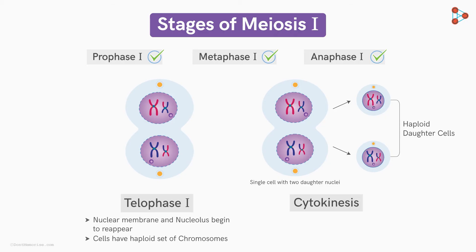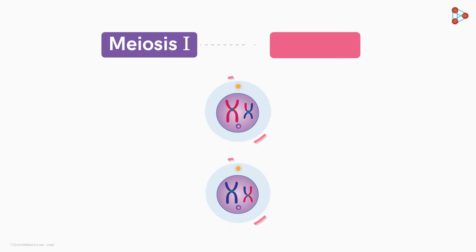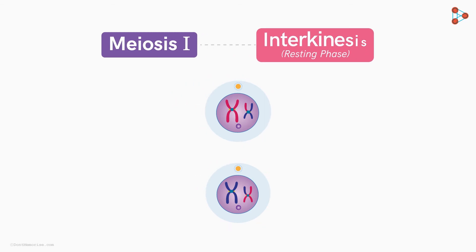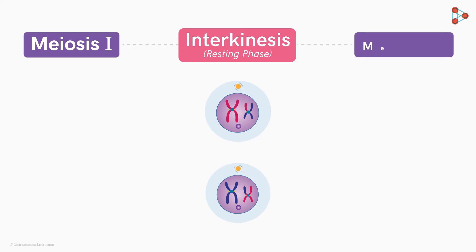In order to separate the sister chromatids from each other, each haploid cell undergoes another round of division. But before that, the haploid cells enter a small resting phase called interkinesis — a short phase with no activities involved. After this, the cell is all set to undergo meiosis II.